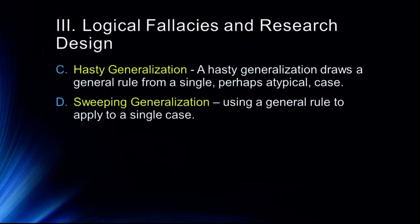Other important logical fallacies for research design are hasty generalization and sweeping generalization. Hasty generalization tries to draw a general rule from a single, perhaps atypical case — for example, one refugee commits a crime and now all refugees are criminals. Sweeping generalization is the opposite: using a general rule to apply to a single case. For instance, if you hold a stereotype about gay men being less masculine and apply that to every single gay man you meet, that would be a sweeping generalization.